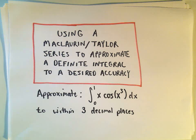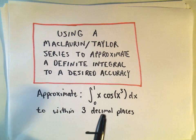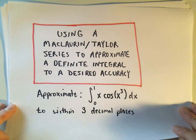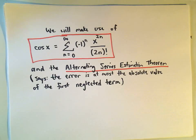In this video I'm going to use a Maclaurin or Taylor series to approximate a definite integral to within a desired accuracy. We're going to approximate the definite integral from 0 to 1 of x times cosine x cubed, to within three decimal places. We're going to use a couple things here to make life a little bit easier.